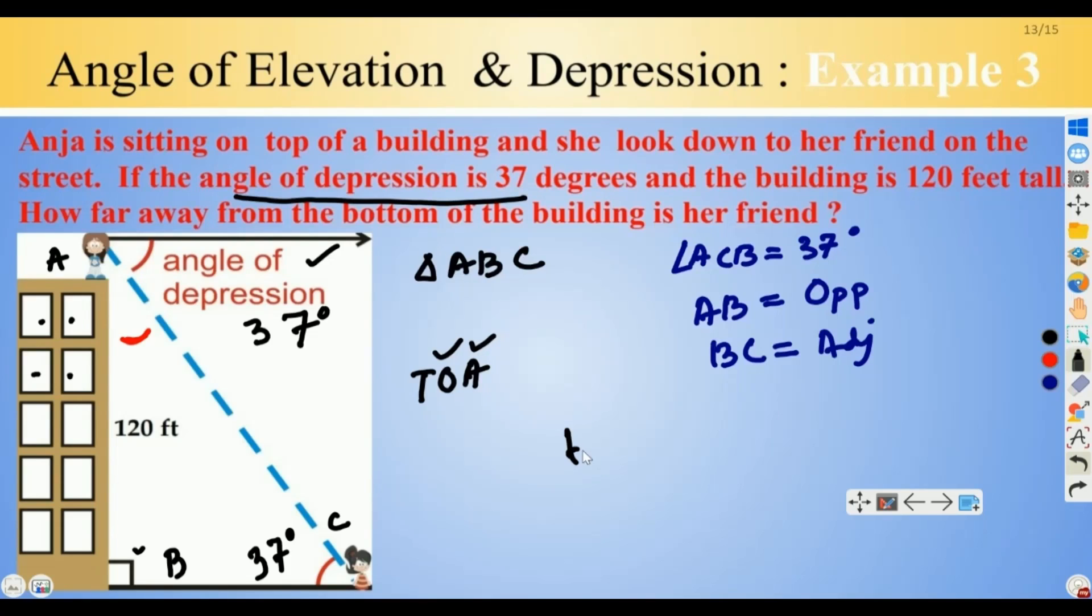We can say that tangent of 37 equals opposite over adjacent, which gives us AB over BC. We have AB equals 120 and let's say BC equals X. Swapping X and tan 37, we obtain X equals 120 over tan 37. We have to use the calculator.